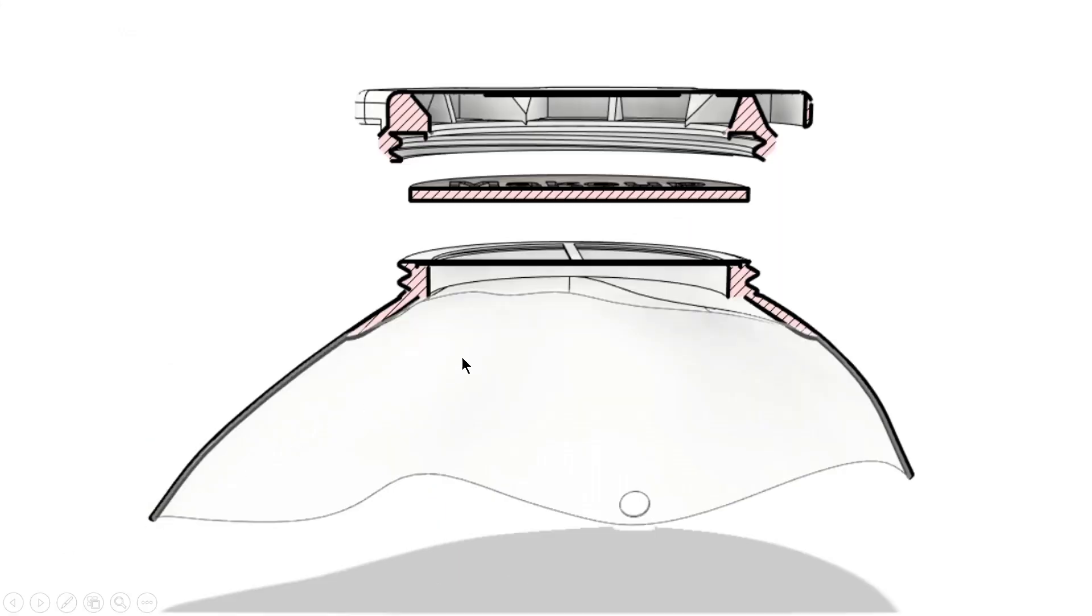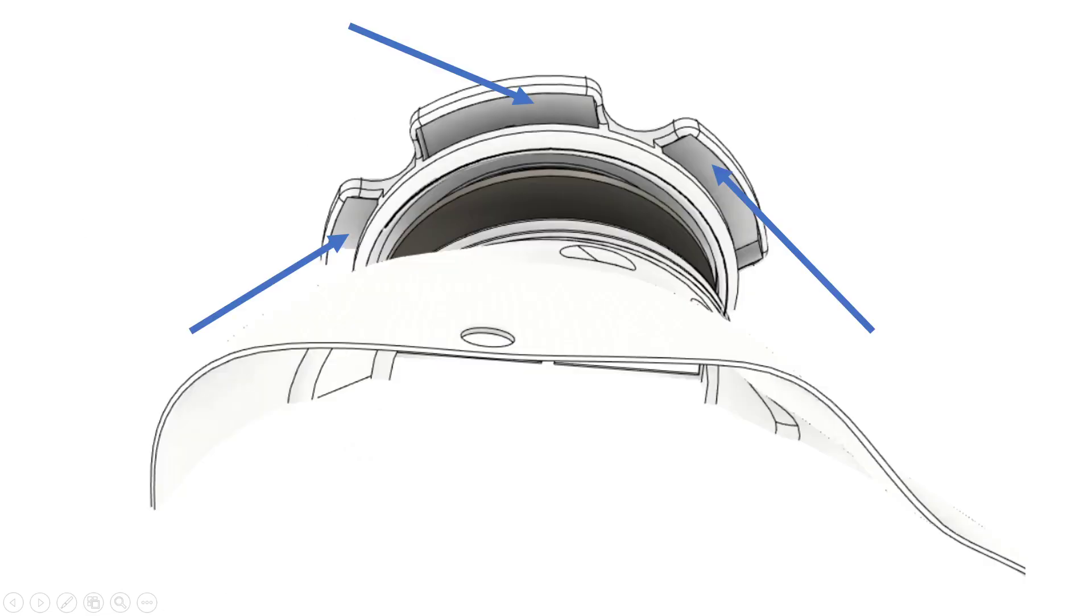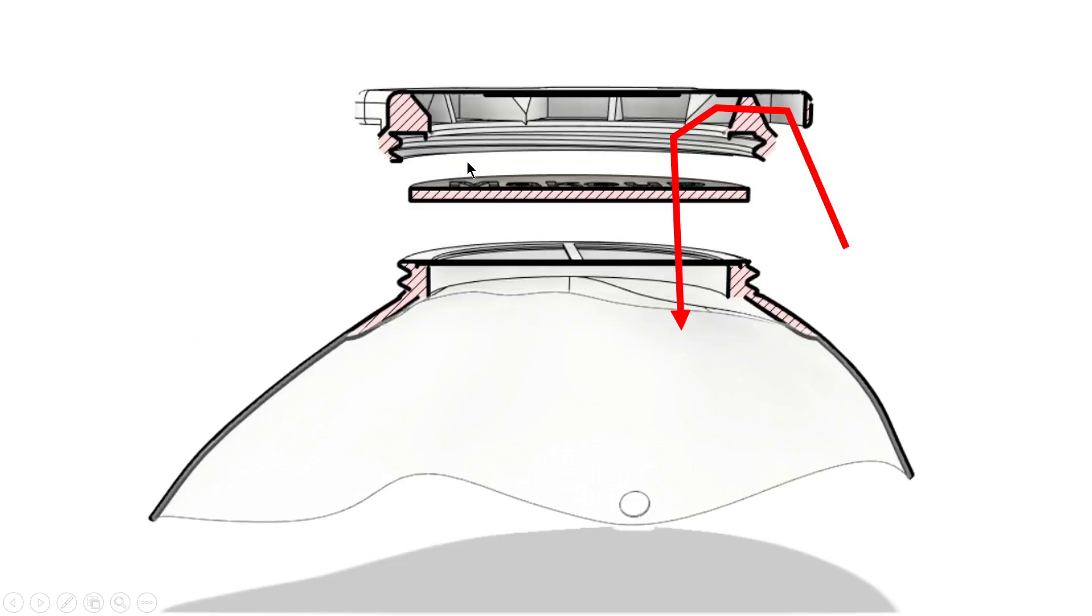First of all, let's just talk about how the regular filtration system works. So you have a reverse airflow cap and that has these little openings on the back of the cap where the air is able to pass in to the cap. And then after it is passed in through those, it just goes straight through the filter and right through the mouthpiece.